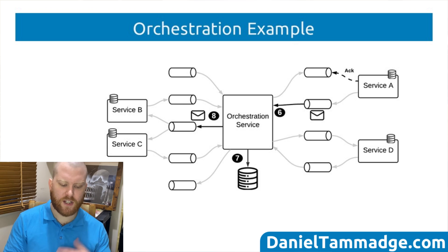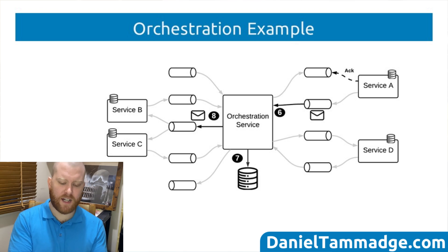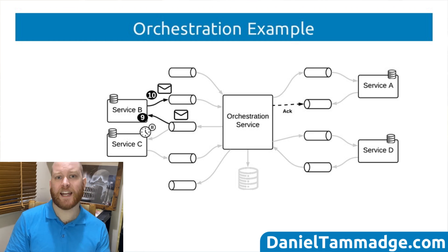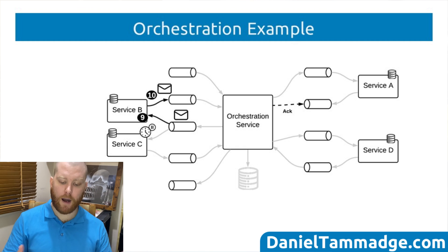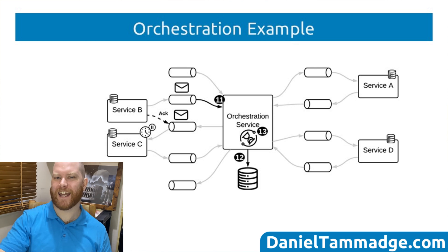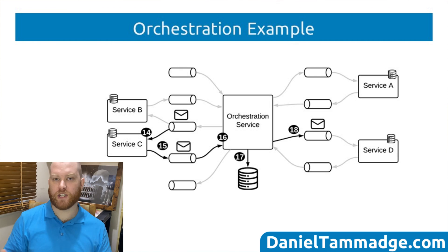The orchestration service will now acknowledge that it has successfully processed the initial event. It consumes the event, stores the processing state in the database, and triggers the next step, which could involve parallel processing by two different services. However, what if one is unavailable or only runs at certain times as a batch process? In this example, Service C is a batch process and is not currently processing events, but Service B is — so it consumes, processes, and publishes the outcome. The orchestration service consumes the result, updates the state, and waits for Service C's result before triggering the next step.